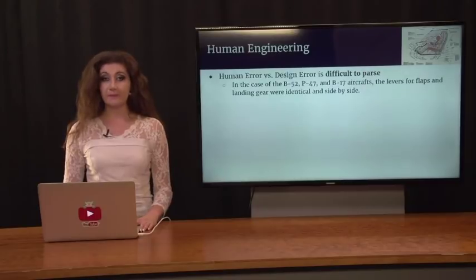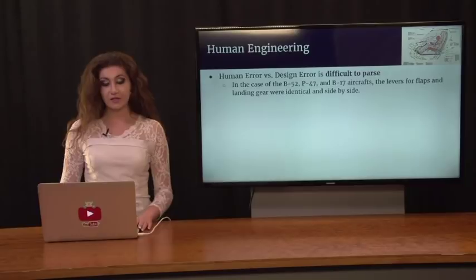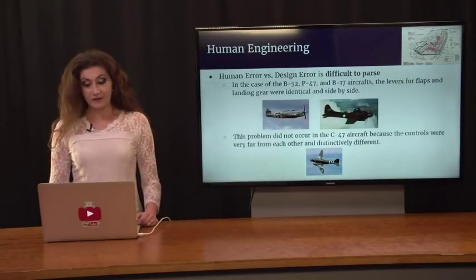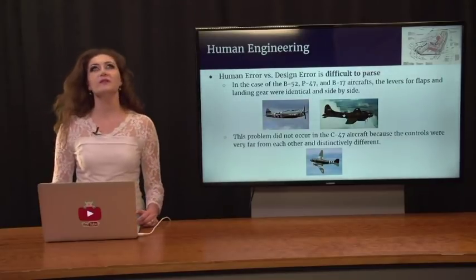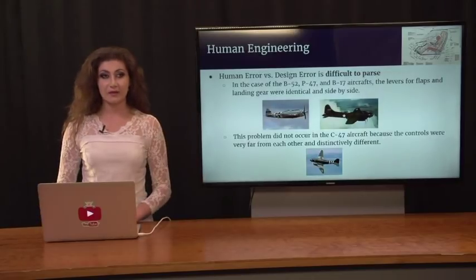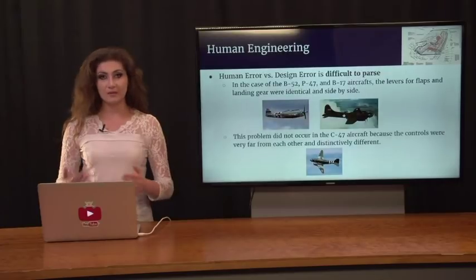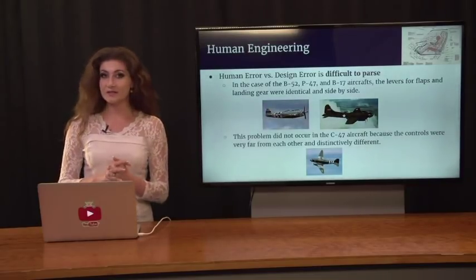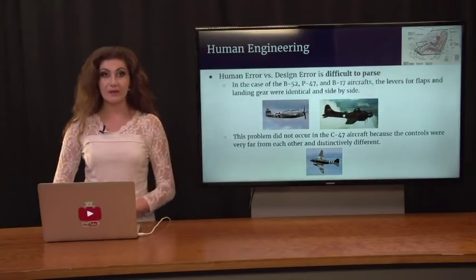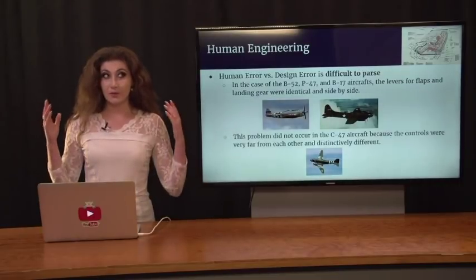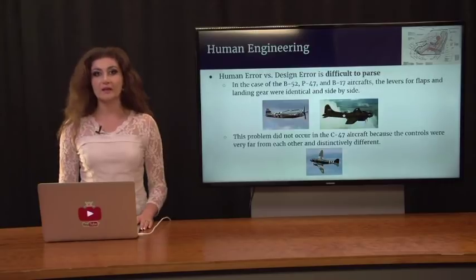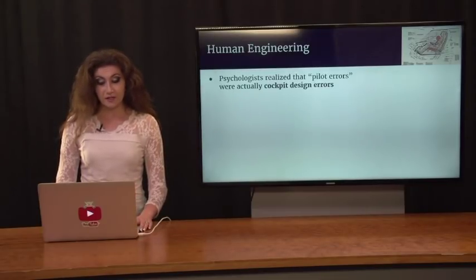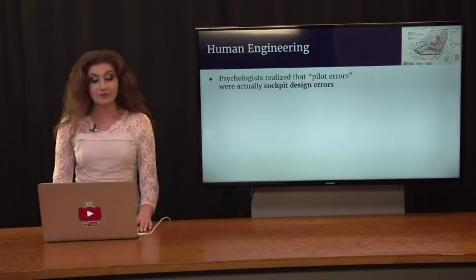In the case of the B-52, P-47, and B-17 aircraft, the levers for the flaps and landing gear were identical and located side by side. However, the problem did not occur in the C-47 aircraft because the controls were very far from each other and distinctively different. Operators met the intelligence and psychomotor requirements — it was simply poor design that was confusing and not intuitive. When there's a war and you're flying, you don't have time to check which control activates which function; there are no mistakes affordable.